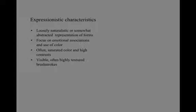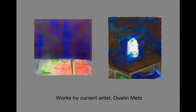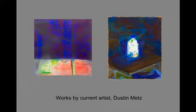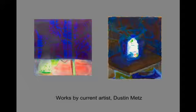Expressionistic characteristics might include: somewhat abstracted potentially, focused on emotional associations, often saturated and high contrast color, and often highly textured brushstrokes. One artist currently working I'm reminded of is Dustin Metz — these two still lives where you can name a few objects, but there's also a highly abstracted sensibility. On the left, almost a sense that night has fallen or a shade is being drawn across the objects. On the right, this milk jug is strangely illuminated — almost haunting. We have some possibility in this project to go a little more toward abstraction, but really think about why you would go toward abstraction and what it is you're trying to explore or provoke in the viewer.